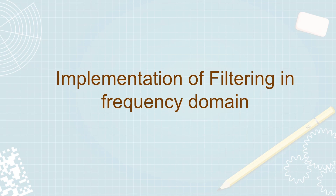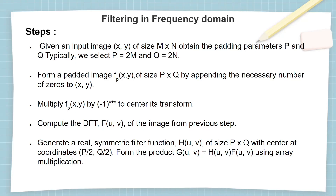Now let us look at the implementation of filtering in the frequency domain. In step 1 we obtain the padding parameters p and q, which are generally considered as 2m and 2n respectively, where m and n are the size of the original image. Then form the padded image by applying zeros to the original image f, and multiply the padded image with (-1)^(x+y) to center the transform.